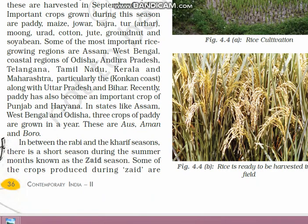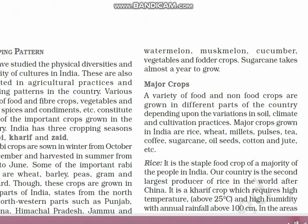The third cropping pattern is the Zaid season, which falls in between the Rabi and Kharif seasons. The main crops produced during the Zaid season are watermelon, muskmelon, cucumber, vegetables, and fodder crops. Fodder crops are crops grown as food for cattle. Sugarcane, however, takes almost a year to grow and spans all three seasons — Rabi, Kharif, and Zaid — because its harvesting time is one full year.